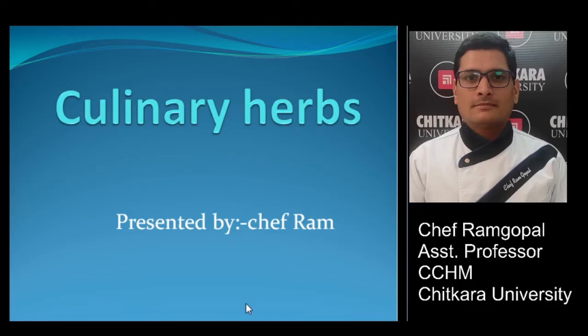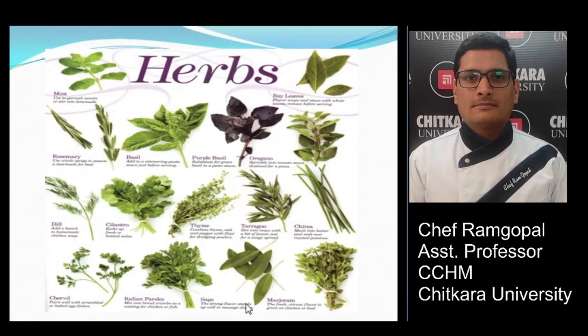Hello students, this is Chef Ramgopal and today we will discuss various types of culinary herbs used in the kitchen. There are hundreds of varieties of herbs used in any particular culinary area, like mint, bay leaf, rosemary, thyme, oregano, chives, tarragon, marjoram, sage, and many more.